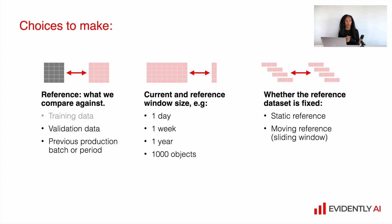You have quite a lot of choices to make. First, what will be your reference data — what you compare against? Options include training data, which is not recommended, validation data, or data from a previous production batch. You also need to decide on the size of the current data and reference data — what batch do you use for comparison. You can have several comparison windows, like daily and weekly, or daily and yearly, depending on the number of objects in your reference and current data.